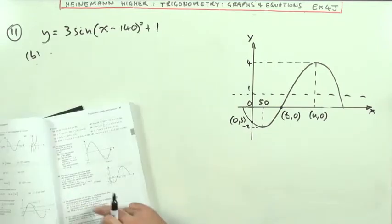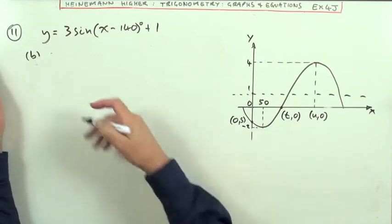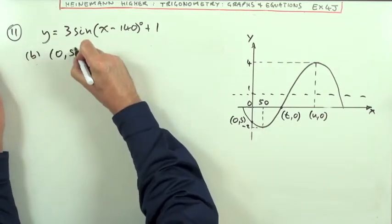Right. Second bit. Part B. Find the values of S and T. Well, they're quite specific points because they've got zeros in them for the X and Y coordinates. Let's do S first of all. Zero S.